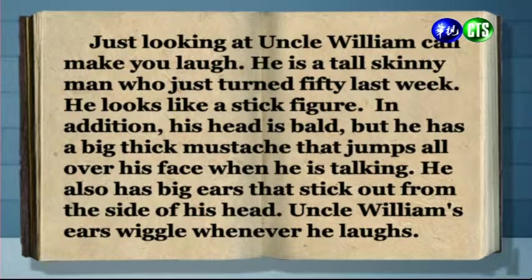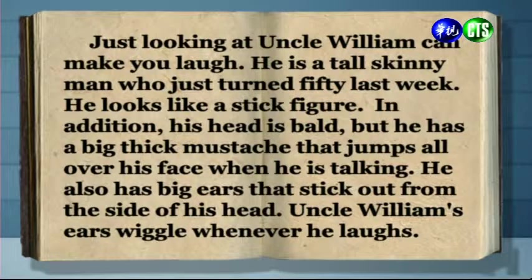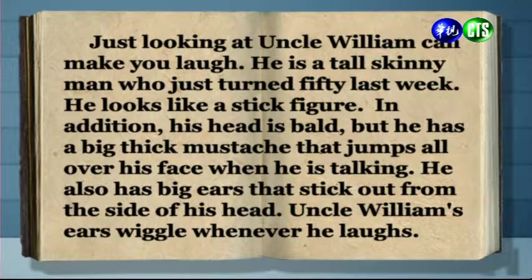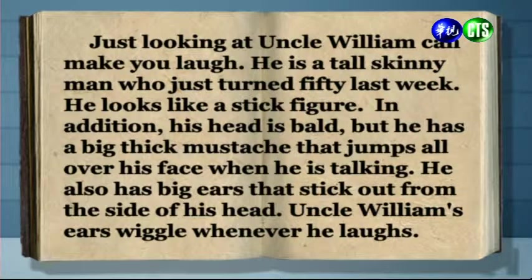好，那這個段落是主體論述段落的第二段。你會發現整個段落除了第一句做了一個主題的開始之外，接下來講述到的都是威廉叔叔的一些外型特色，包括他又高又瘦像個瘦竹竿一樣，禿頭，而且有一把濃密的大鬍子，而且還有一對招風耳會在那邊晃動，但到目前為止都沒有所謂的結尾句。